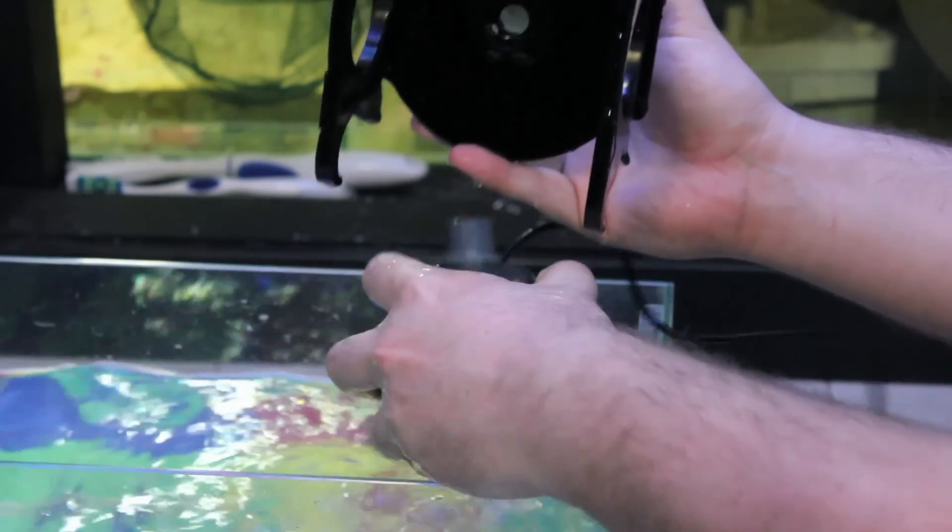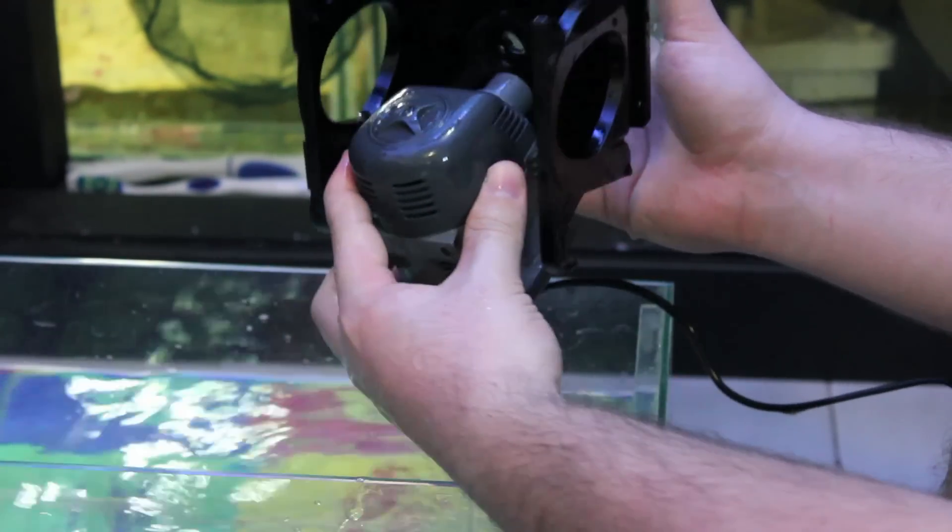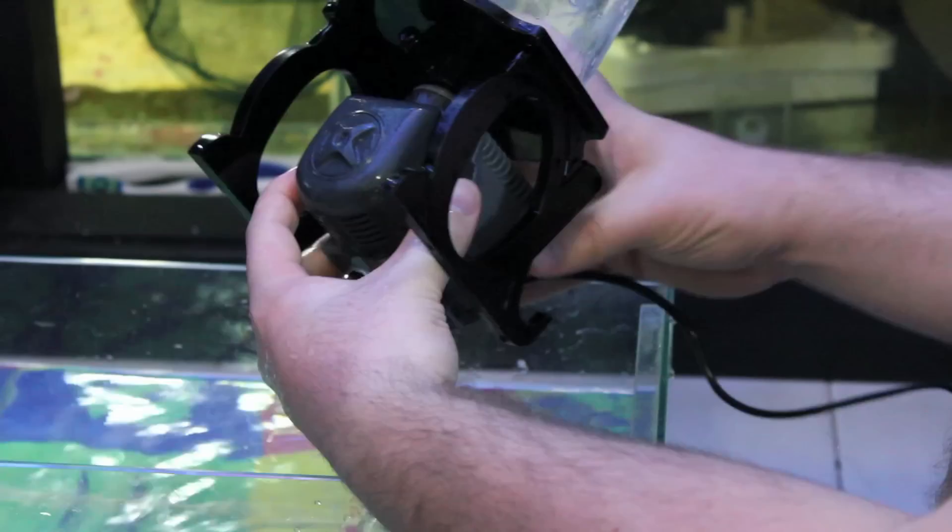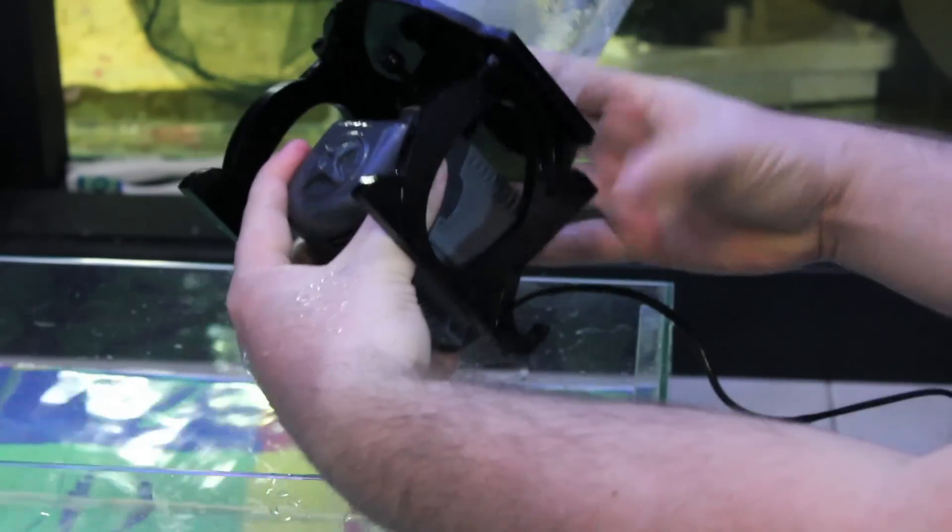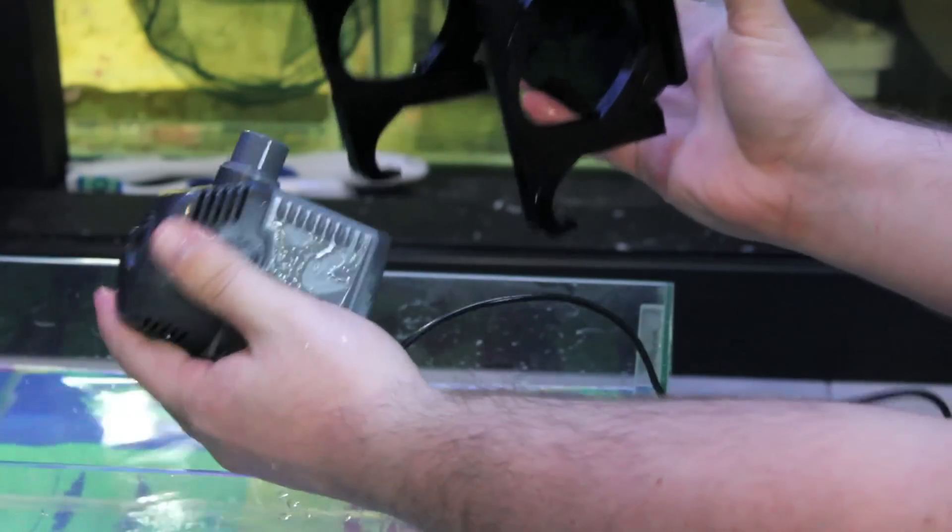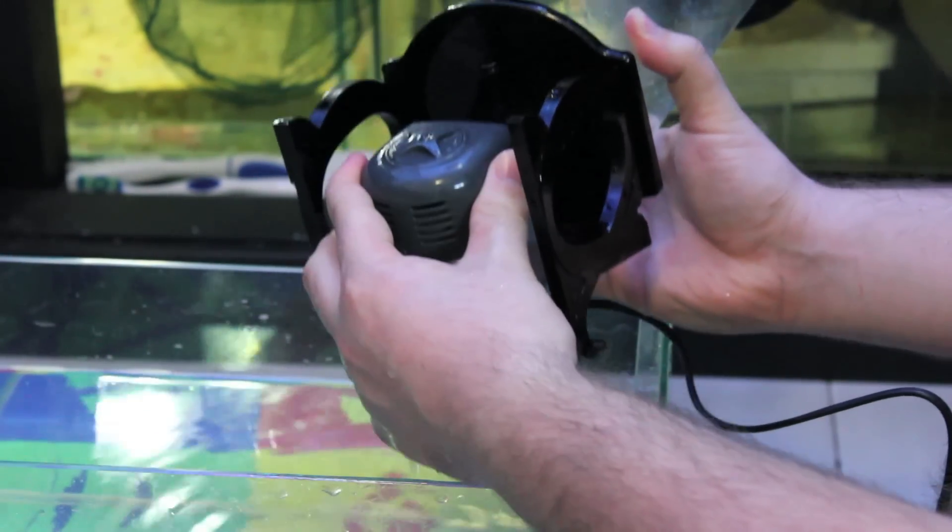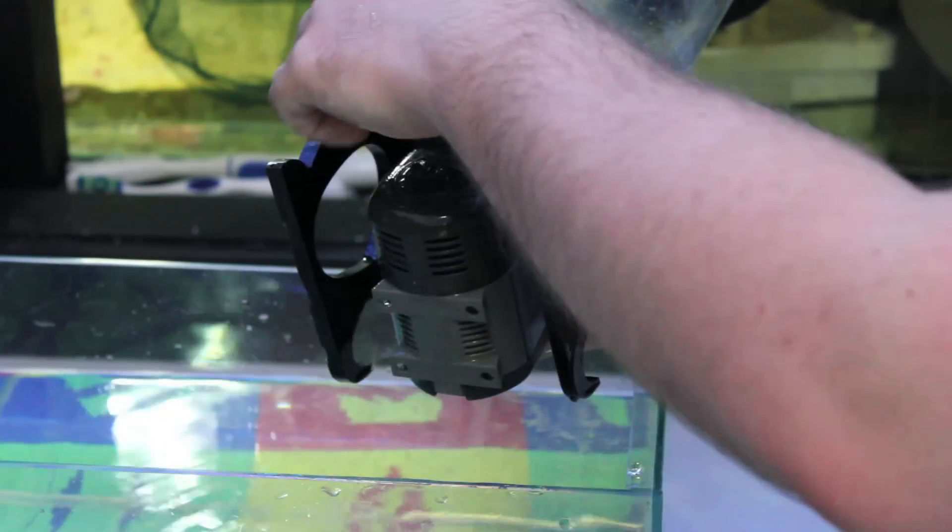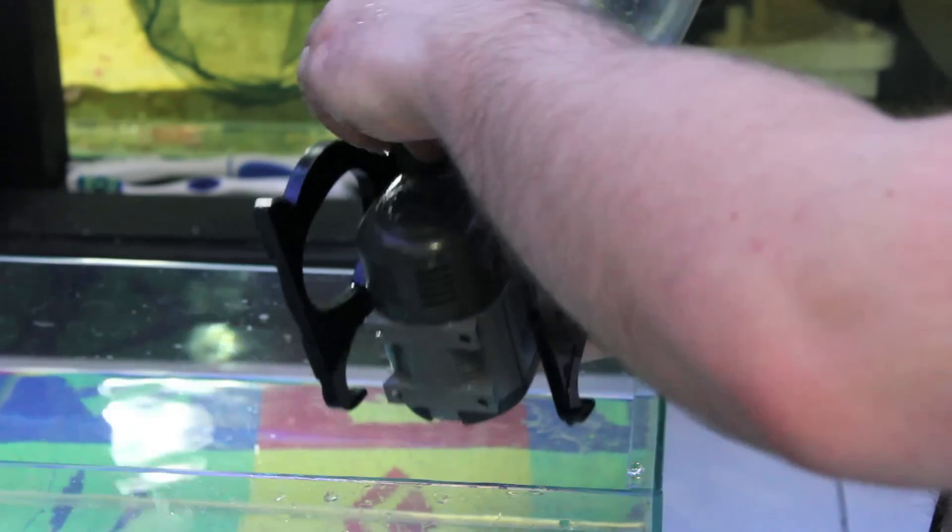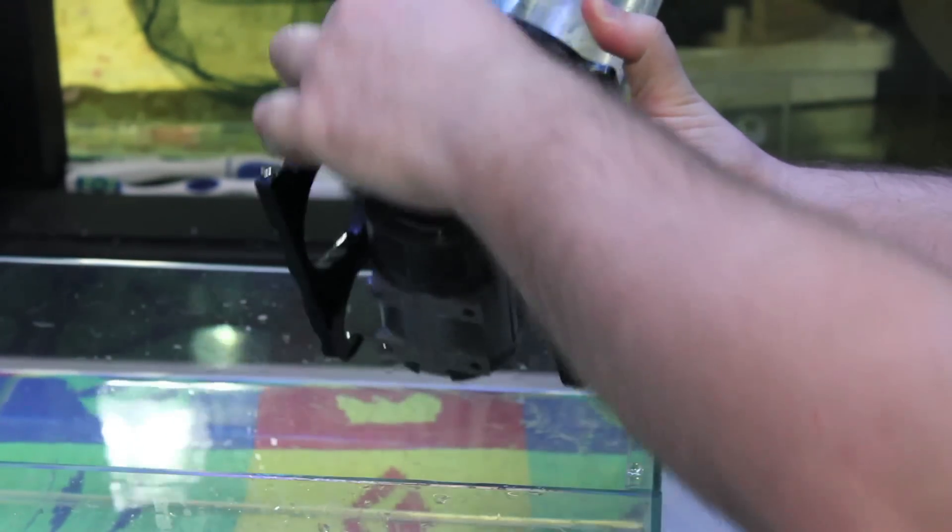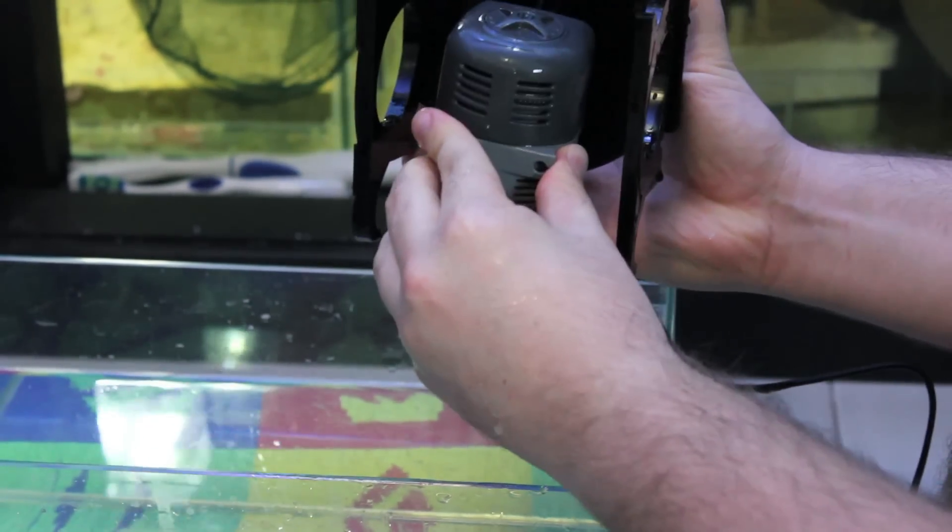It's got this screw at the top which holds it in. If you ever need to change over pump, it's very simple to undo this screw, take your pump out, either replace it or give it a quick clean and then pop it back in here and screw it in. That's now in there nice and solid.